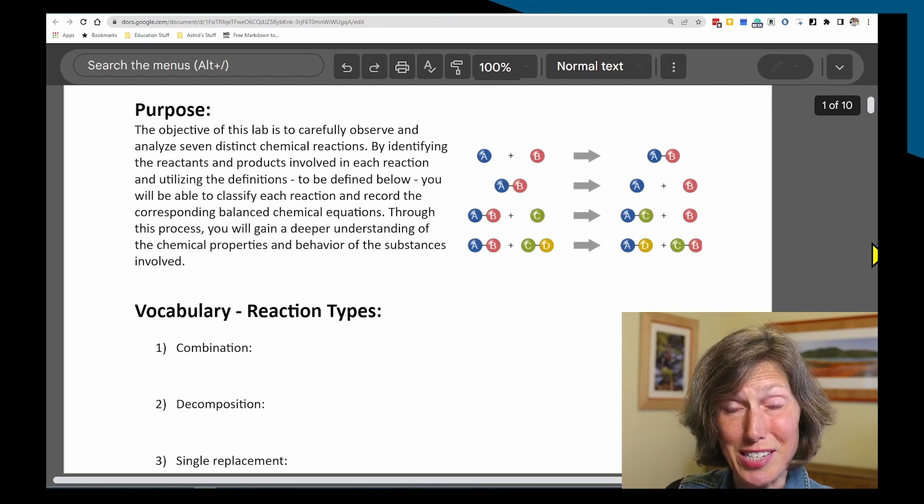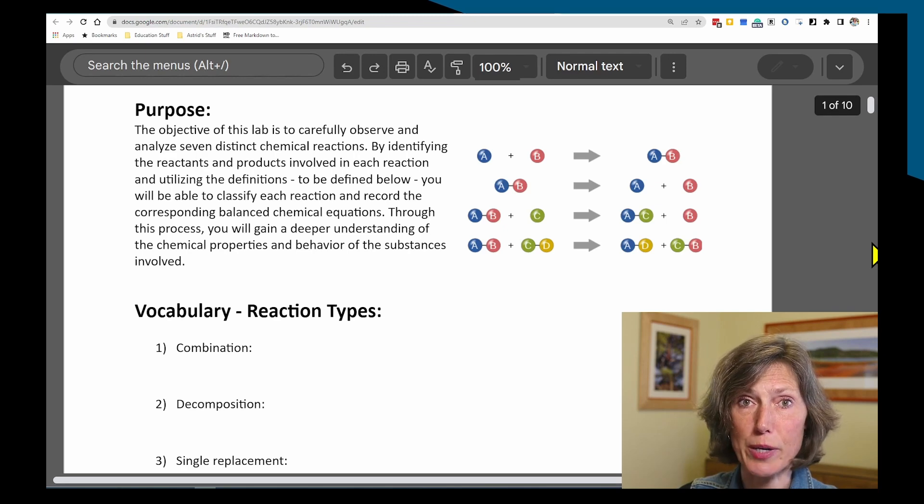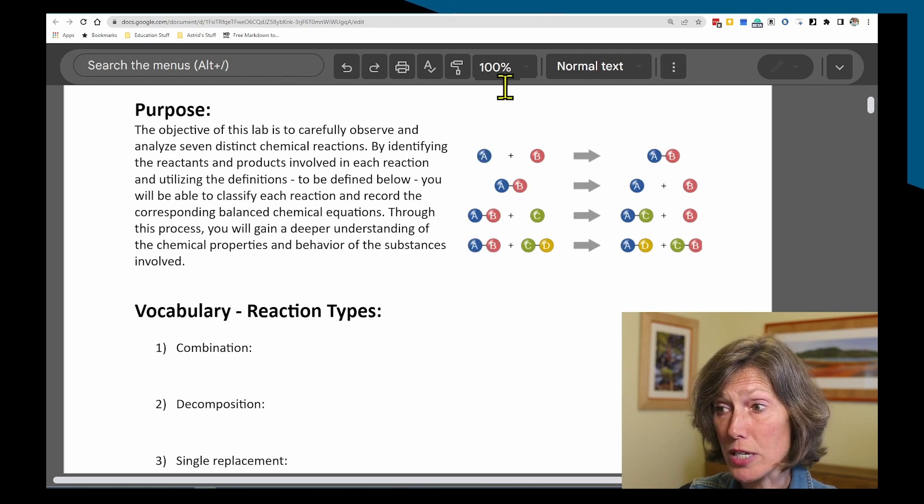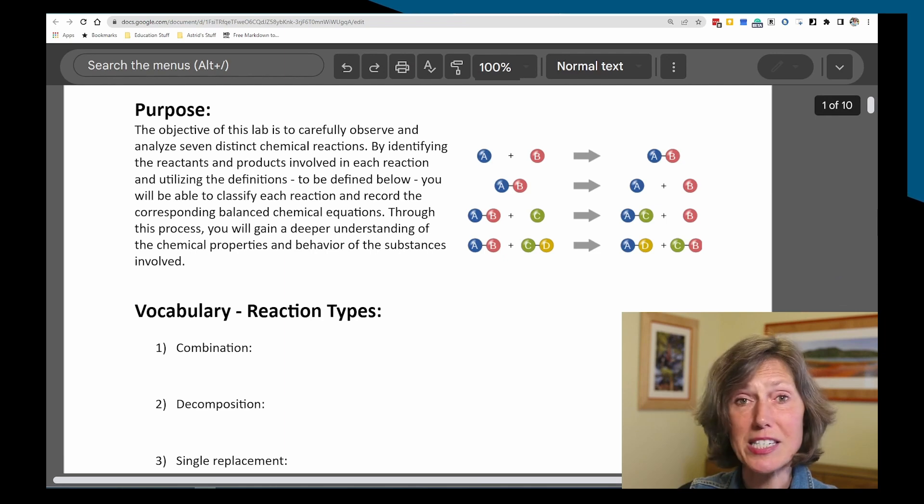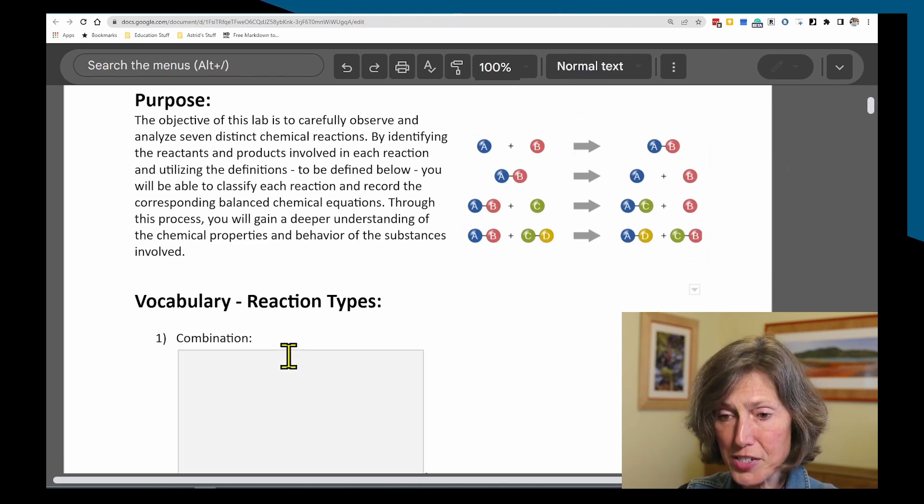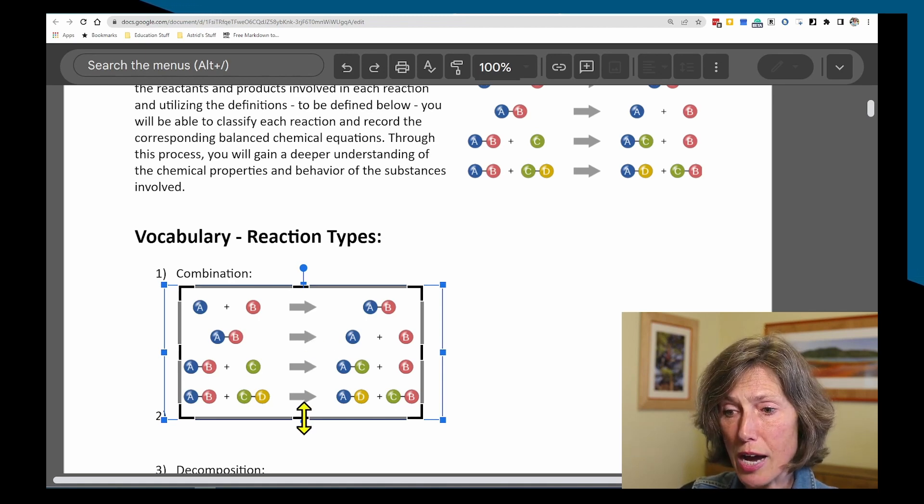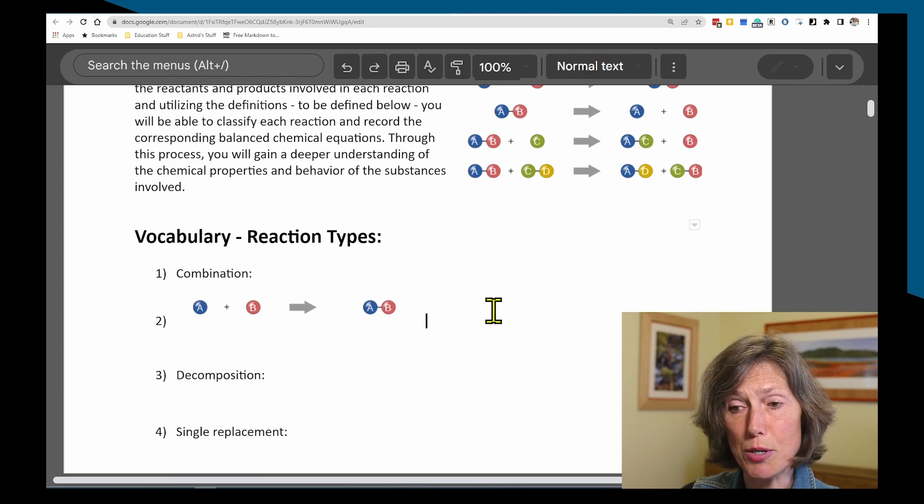So actually when I do this lab with my students I haven't even taught them about the different types of chemical reactions. All I give them is this very simple diagram and by staring at that diagram and using that image they can copy that image. Watch me do it. Paste it in here and then basically crop it to the reaction that they might like best because it fits with that particular reaction type. So the combination is the first reaction. Now they've got that reaction right there.